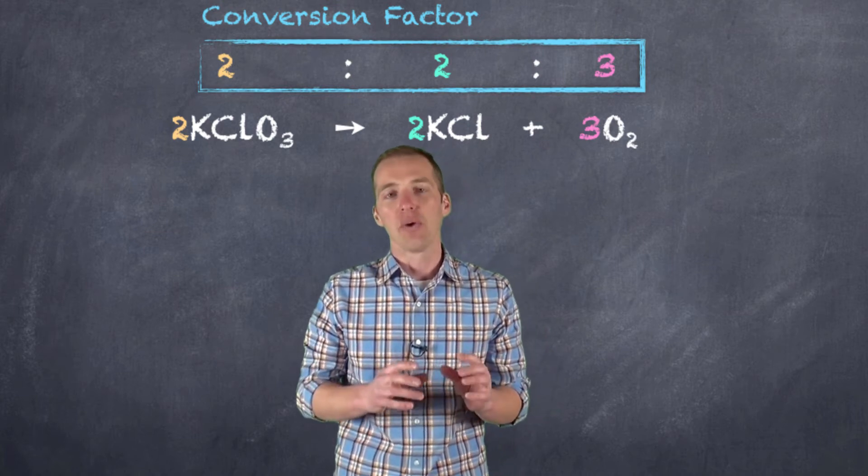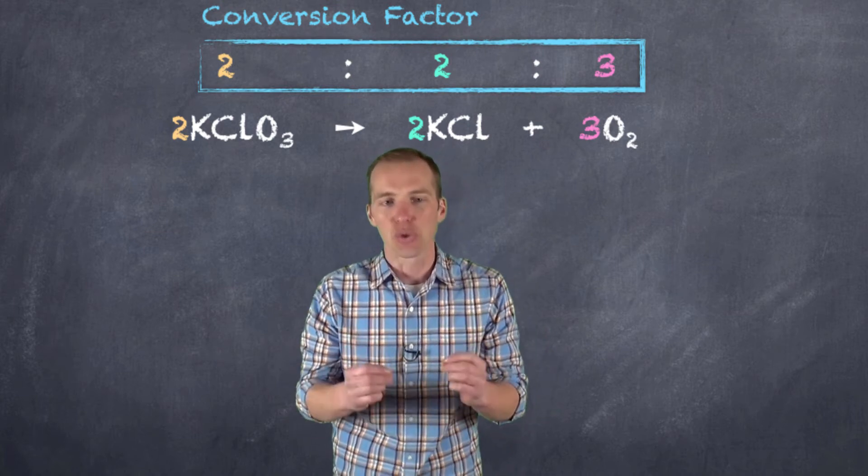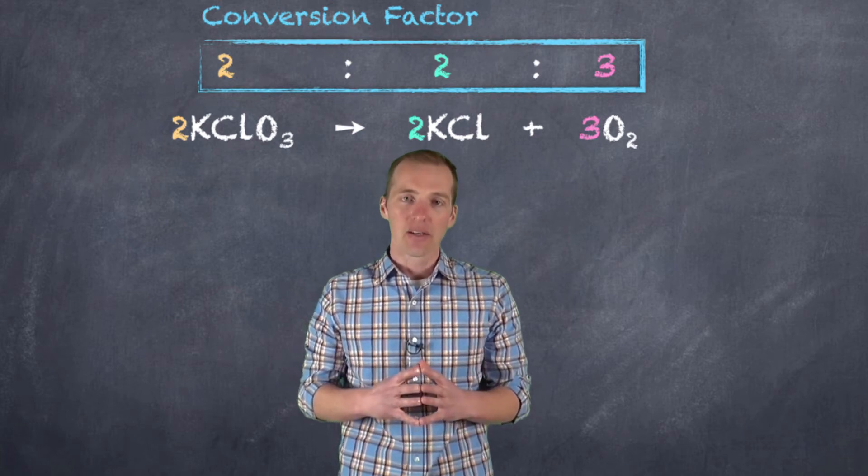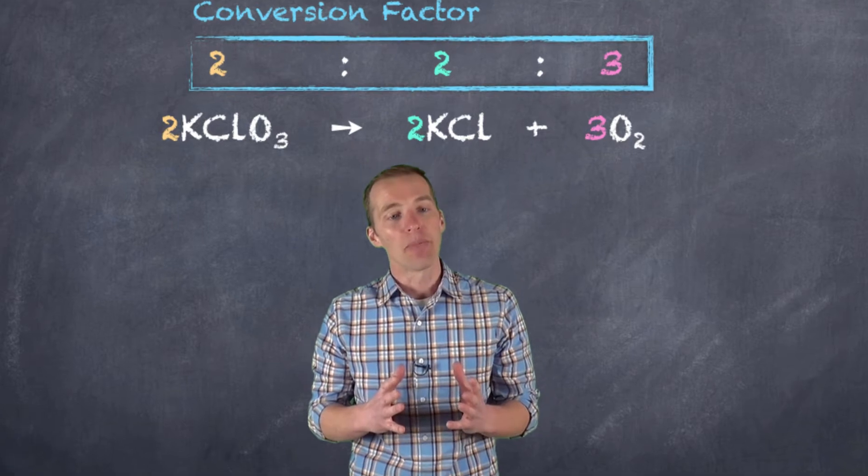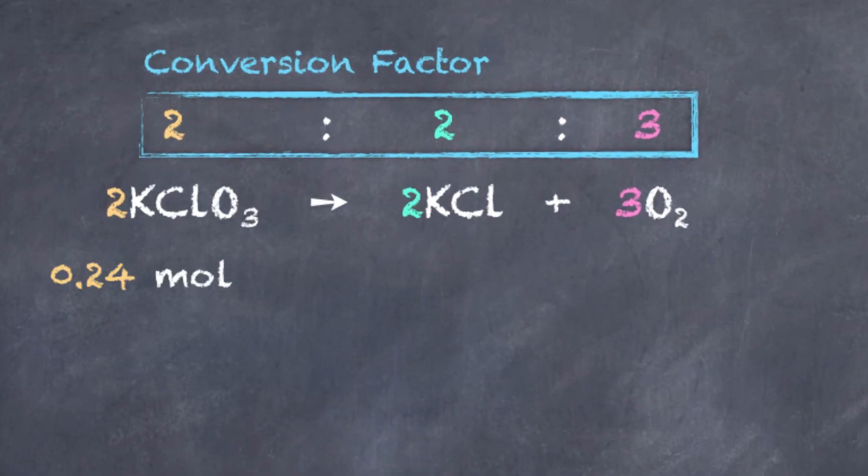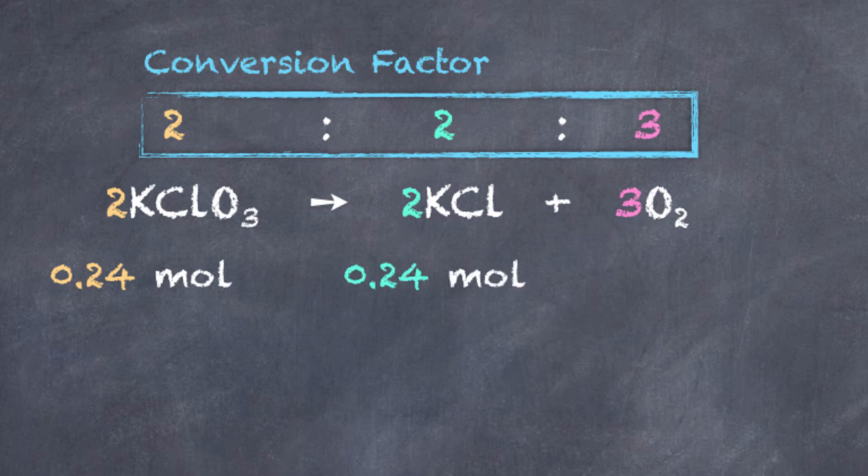Now, it's unlikely that we are going to be using exactly two moles of potassium chlorate, but this ratio still has to be maintained. So, for example, if we have 0.24 moles of potassium chlorate, we're going to see that we're going to produce 0.24 moles of potassium chloride, but it's not so easy to try and immediately figure out how many moles of oxygen gas we're going to get. So we have to use this conversion factor.